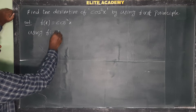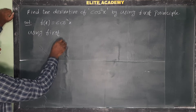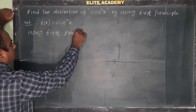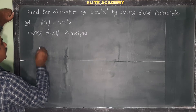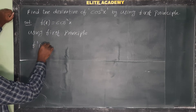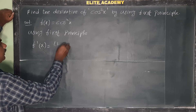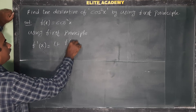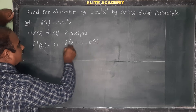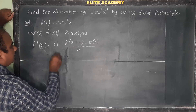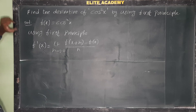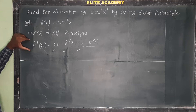We will find the derivative using first principle. The formula is f'(x) = limit of [f(x+h) - f(x)] / h, as h tends to 0. This is called the first principle of derivative.